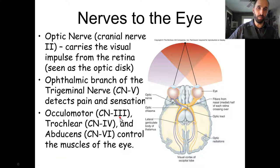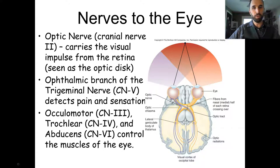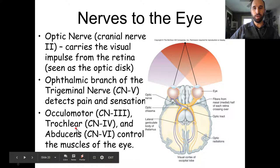Oculomotor controls most extrinsic eye muscles as well as intrinsic muscles — controlling pupil size and focusing the lens. The abducens and trochlear nerves also control some of the extrinsic muscles.